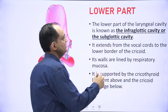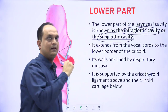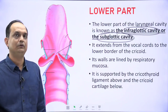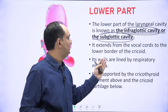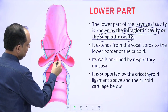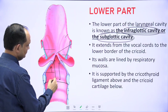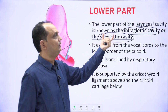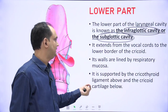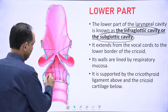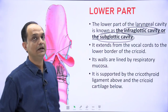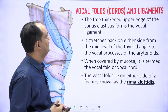The lower part of the laryngeal cavity is known as the infraglottic or subglottic cavity. The glottis is the fissure between the two vocal cords, and the area below the vocal cords is the infraglottic area. It extends from the vocal cords to the lower border of the cricoid cartilage. Its wall is lined by respiratory mucosa and is supported by the cricothyroid ligament above and the cricoid cartilage below. The lateral cricothyroid ligament forms the cricovocal membrane.